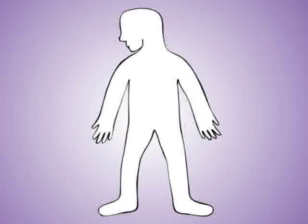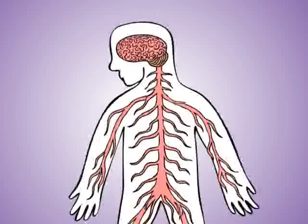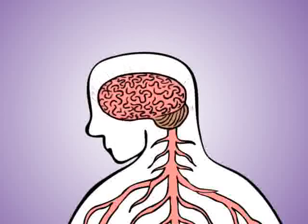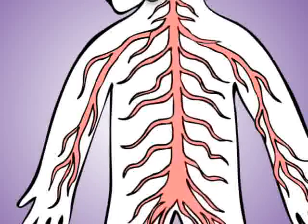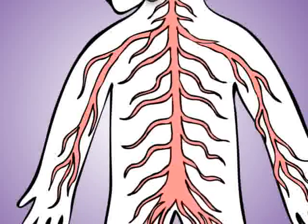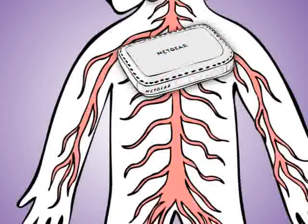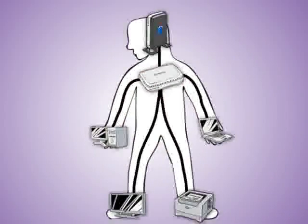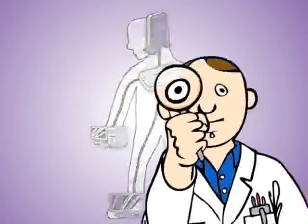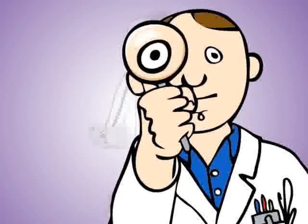Think of a network as something similar to your body's central nervous system. At the top of the network is a brain that handles all the traffic coming through. This is called a router. The brain is connected to a spine that sends signals throughout your network. This device is called a switch, and it distributes signals to all of your computers and devices via network cables.